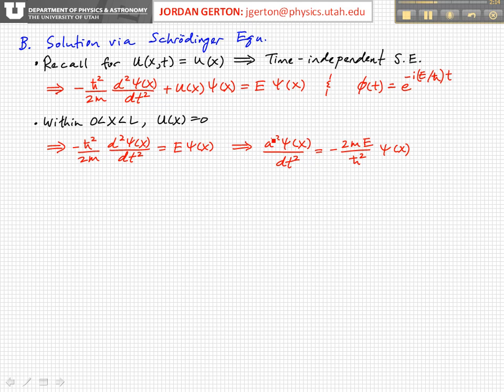We can rearrange terms here so that we have a second-order linear differential equation: d-square psi dx squared equals minus 2mE divided by h-bar squared times psi.